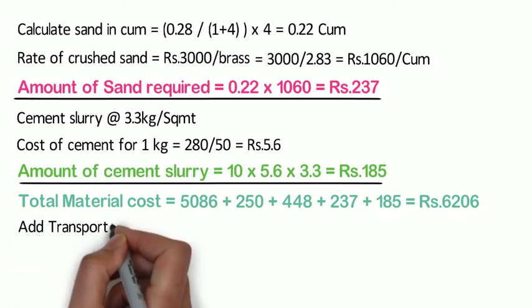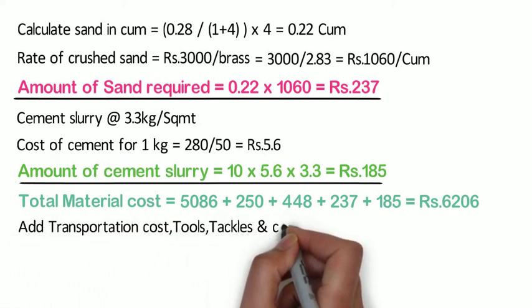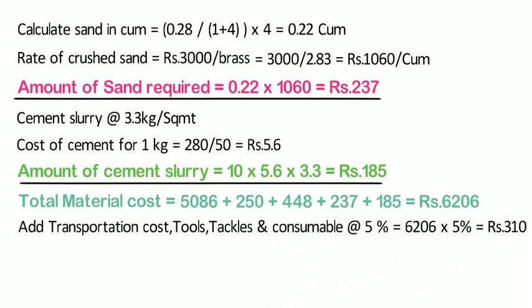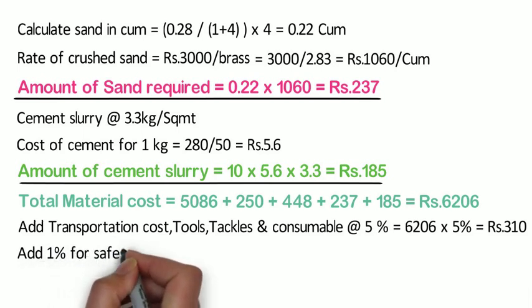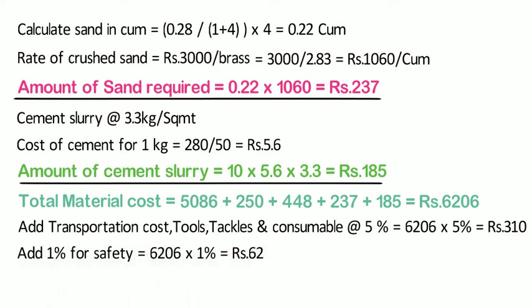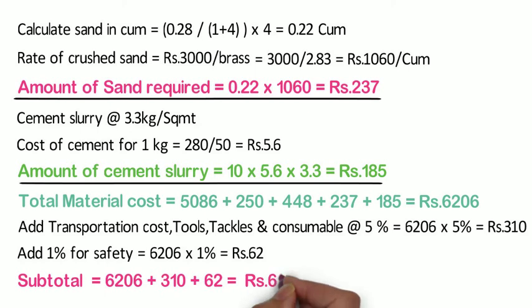Add transportation cost, tools, tackles, and consumables at 5%: 6,206 x 5% = 310 rupees. Now add 1% for safety: 6,206 x 1% = 62 rupees. The subtotal is 6,206 + 310 + 62 = 6,579 rupees.